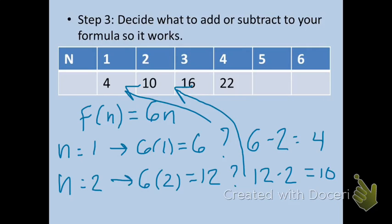Now, it looks like every time, we just need to subtract 2, as you can see right here, from 6n to figure out that specific term in our sequence. So, right now, our formula stands at f(n) equals 6 times n minus 2.